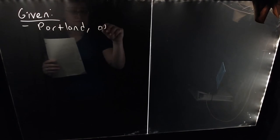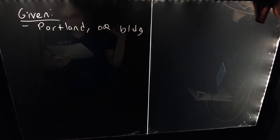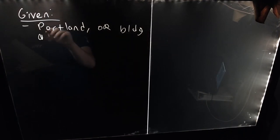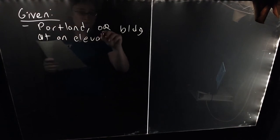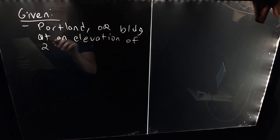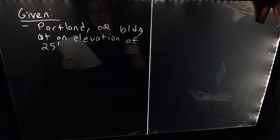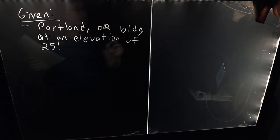I'm going to write out the problem — given and find, all the details — and then we'll begin to work through it. So we're going to have a building located in Portland, Oregon, built at an elevation of 25 feet above sea level, and it has the following properties.